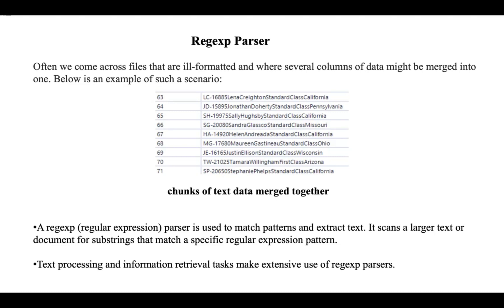Let us discuss the Regex parser. We usually come across files that are ill-formatted — files which have several columns of data, and that data might be merged into a single column. As you can see in the image, these are actually different columns, but they appear as one column in the dataset with numerical values and different classes merged together.